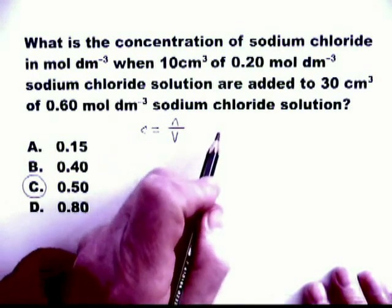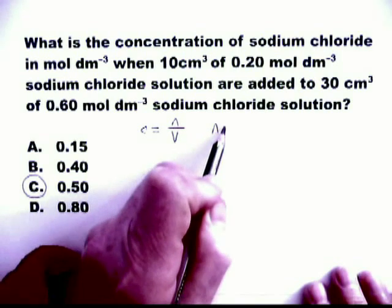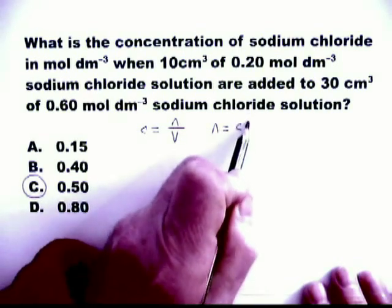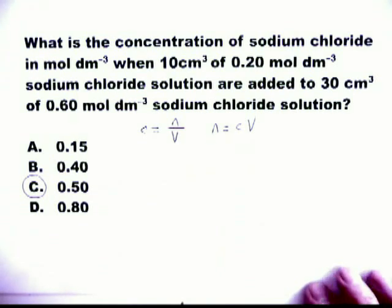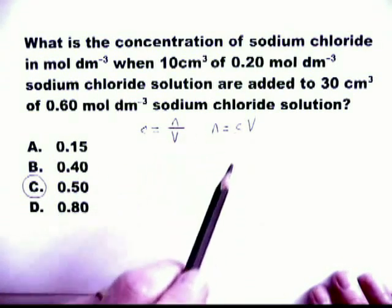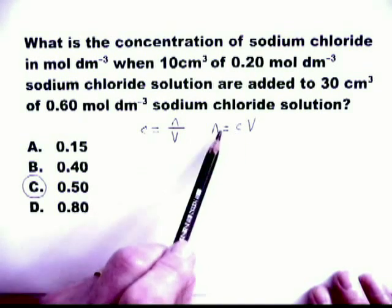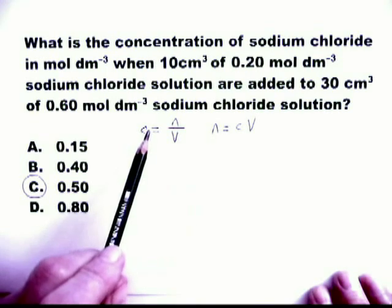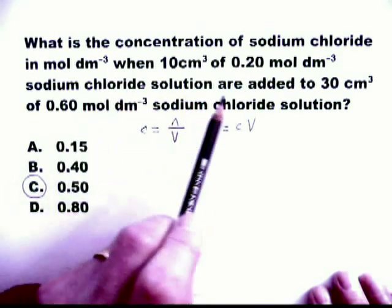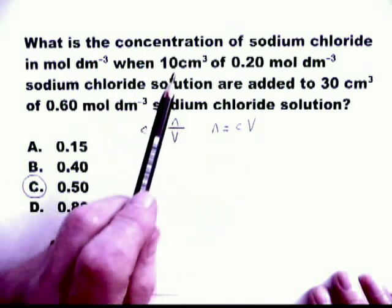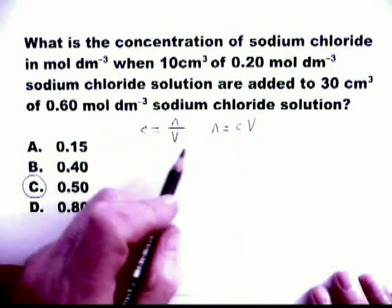C equals N over V. We will now rearrange this so that N equals C times V. These are the two formulas we're going to use. We're going to use N equals CV first, then C equals N over V. We're going to use N equals CV to find the number of moles, and then C equals N over V to find the concentration.